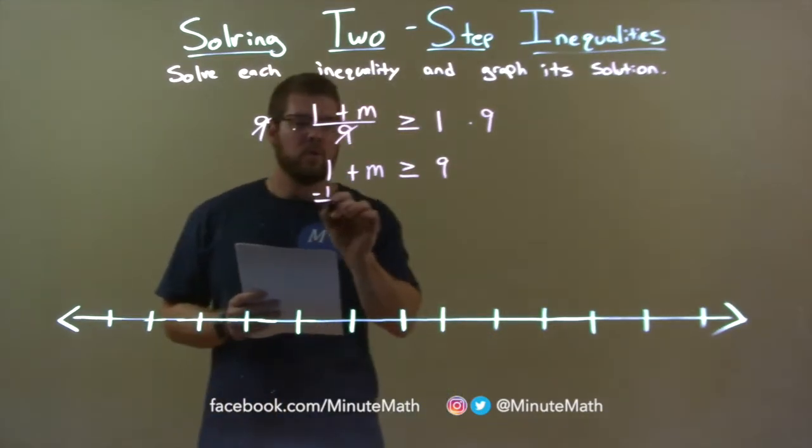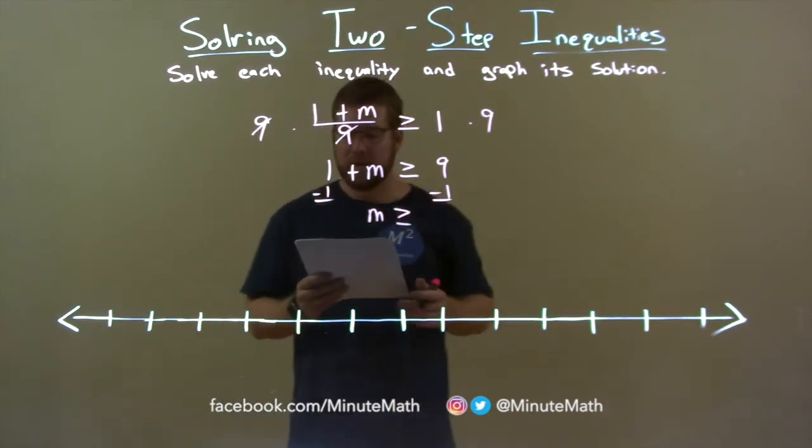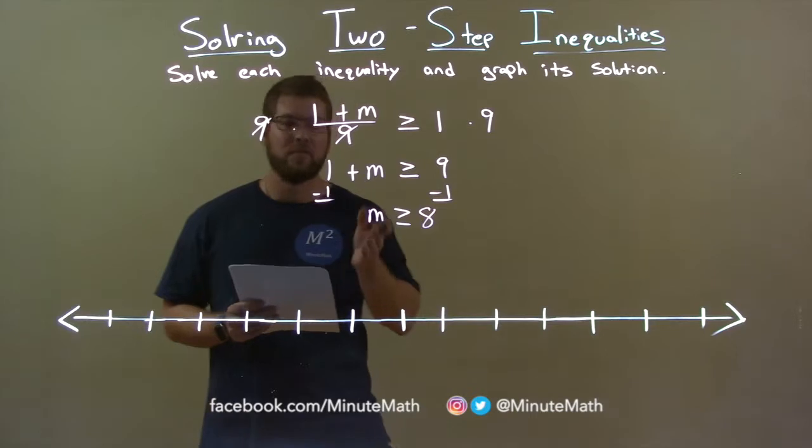So now I subtract 1 to both sides, and m is now completely by itself. It's greater than or equal to 9 minus 1 being 8. And there we have our answer.